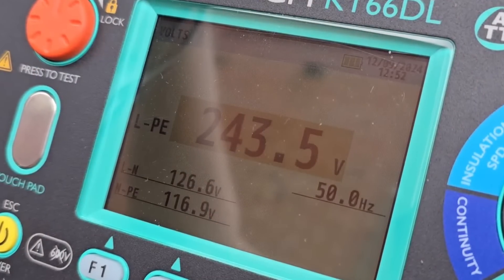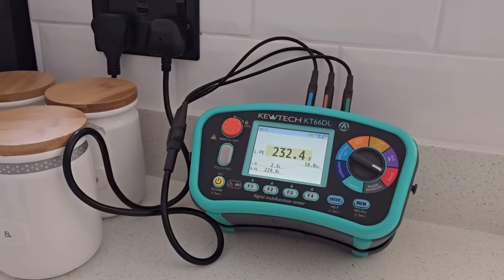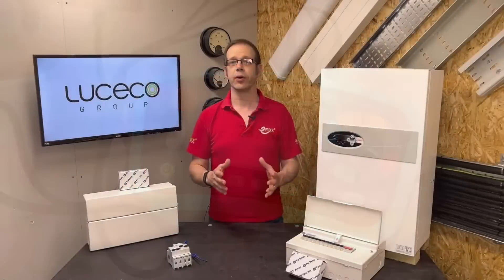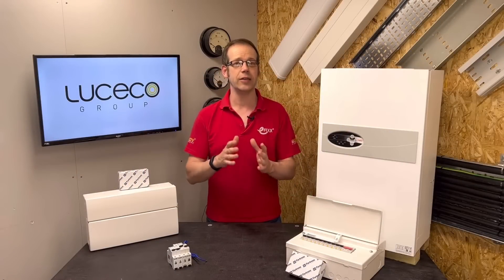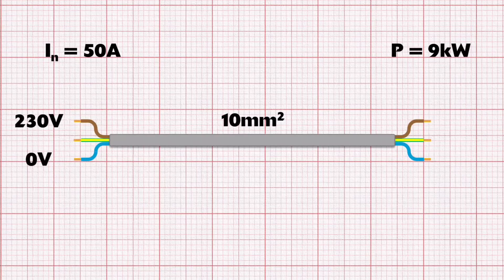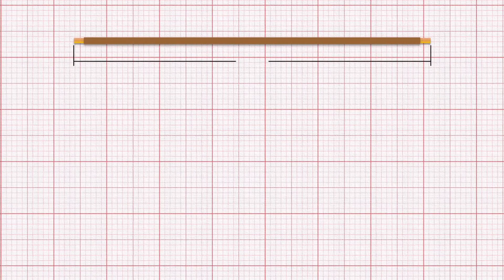Whatever voltage we measure across the incoming terminals of our consumer unit, we will always get less at different points in our installation because of the volt drop. If current is flowing through a conductor, there must be a difference in voltage between any two points in that conductor. We tend to think of the line conductor being at 230 volts and the neutral at zero volts, and therefore when we connect a load between them, current will flow through the load due to the difference in electrical pressure between those two conductors. But if we take a short section of line conductor just one metre long, and current is flowing through it, there must be a difference in voltage between those two points a metre apart.